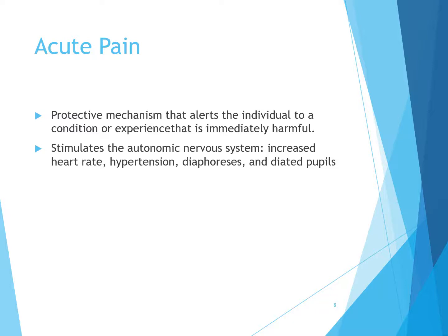Acute pain is a protective mechanism that alerts the individual to a condition that is immediately harmful. It stimulates the autonomic nervous system to increase heart rate, cause hypertension, diaphoresis, and dilated pupils.